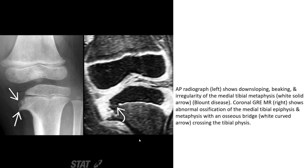This MDA angle is more likely indicative of Blount's disease. In another case, there is downsloping, beaking, and irregularity of the medial tibial metaphysis. This is Blount's disease. On coronal MRI, there is abnormal ossification of the medial tibial epiphysis and metaphysis with an osseous bridge across the tibial physis.